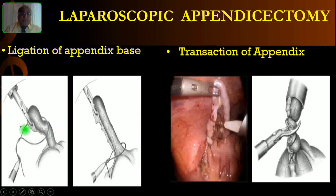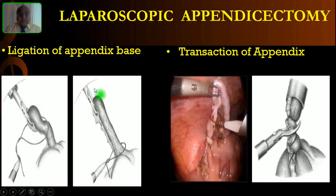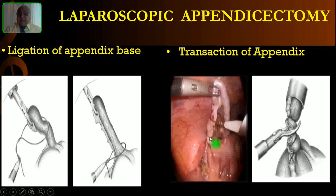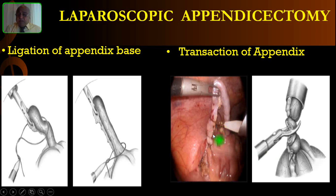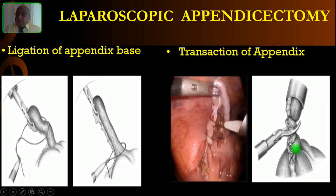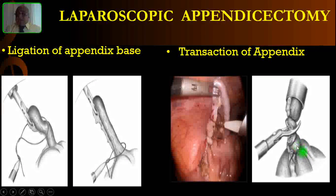You have to tie a Roeder's knot, then put it over the appendix and tighten the first ligature at the base of the appendix. Then put a second ligature within one centimeter above the first one, and a third ligature slightly above the second. Finally, cut the appendix between the second and third ligatures. After cutting, there may be excessive mucosa in the stump — you have to trim it. The stump length should be within two to three centimeters; if more, the patient may develop stump appendicitis.